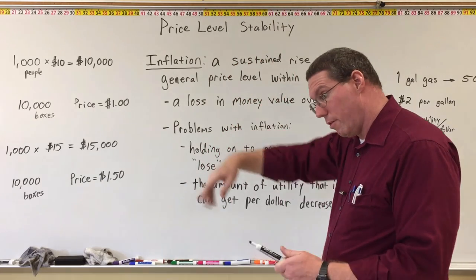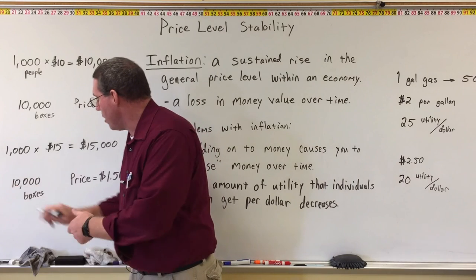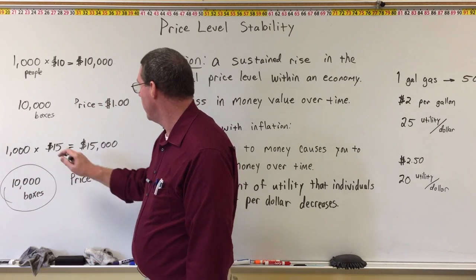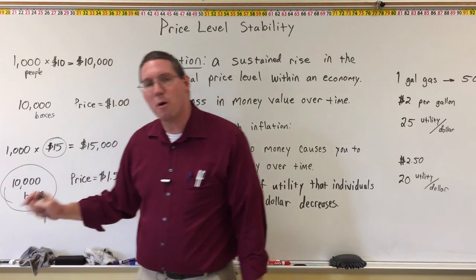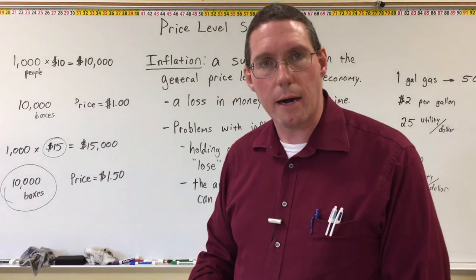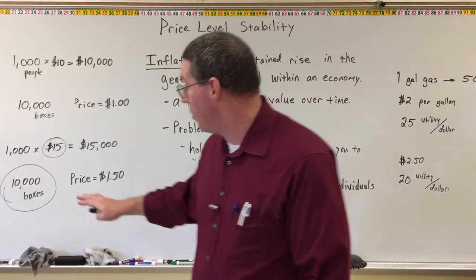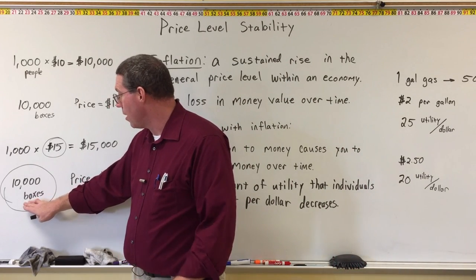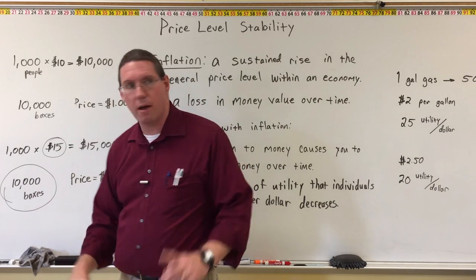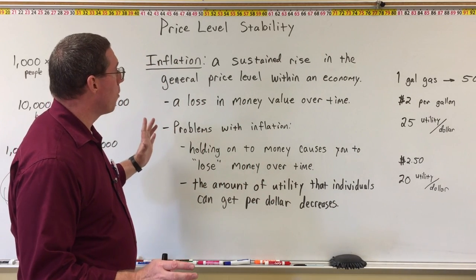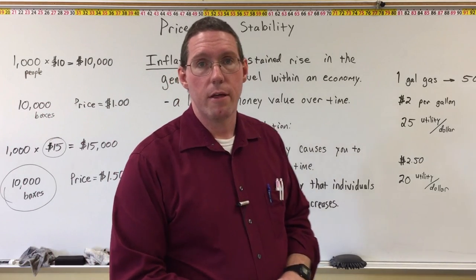That, in a very basic example, is what inflation is — a sustained rise in the general price level within an economy. In this economy there's only one product and its price went up by fifty percent. That's a lot of inflation, but nothing else about this society changed. Each person is still only going to enjoy ten boxes. The change needs to happen not in having more money, but in having more stuff — more output. If there were more than ten thousand boxes, each person could have more. Simply giving people more money without increasing output will only result in inflation.